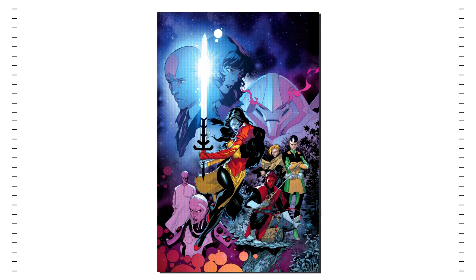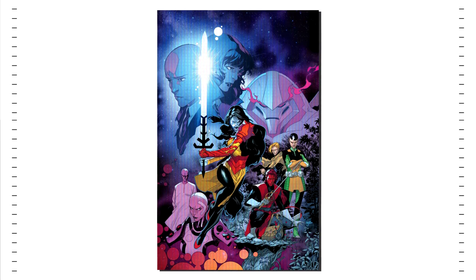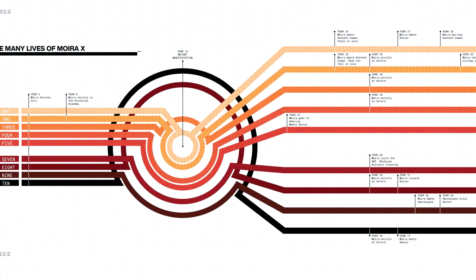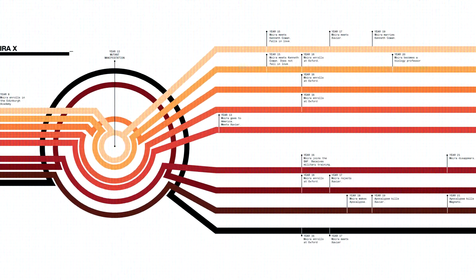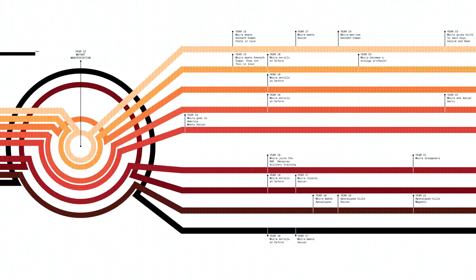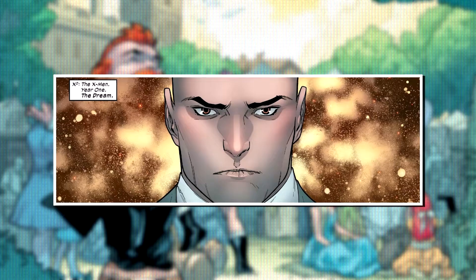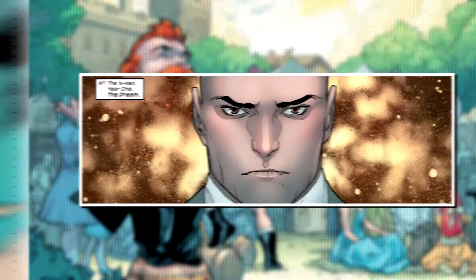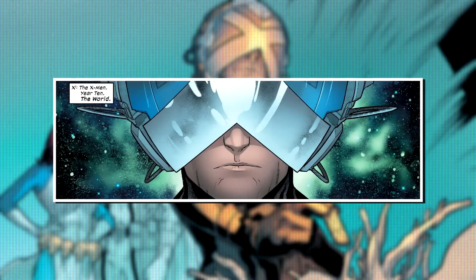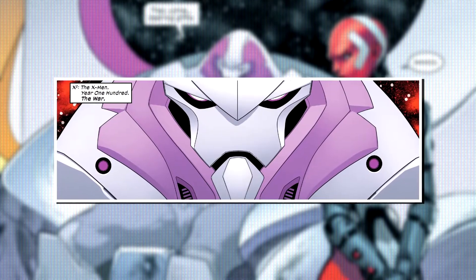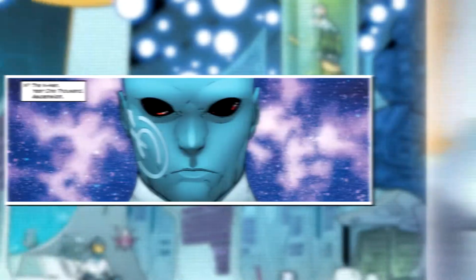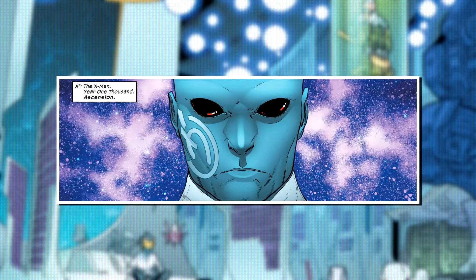Playing into its name, Powers of X offers a look at Marvel's mutant history by focusing the scope on years that vary by magnitudes of 10: 10 to the power of 0 for year 1, 10 to the power of 1 for year 10, 10 to the power of 2 for year 100, and 10 to the power of 3 or 4 for year 1000.